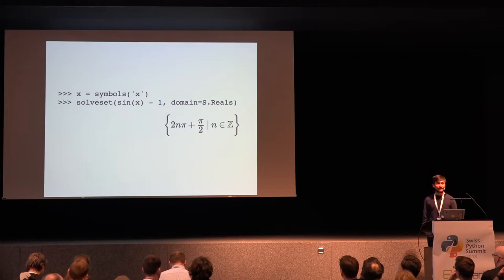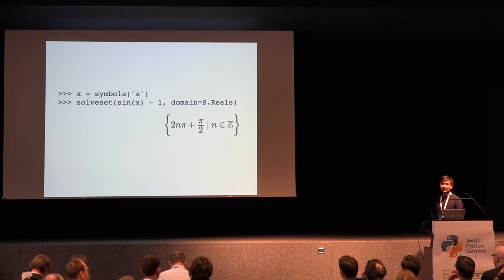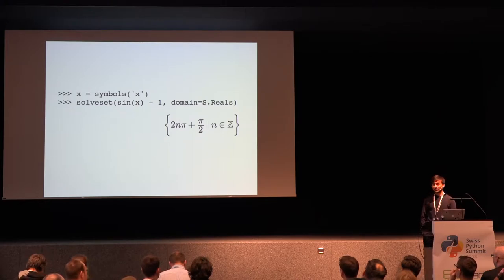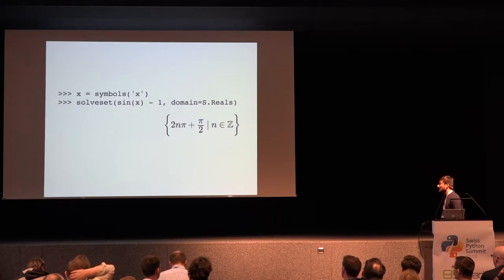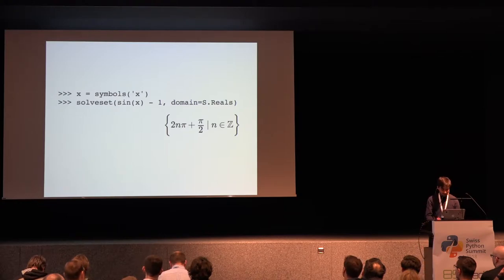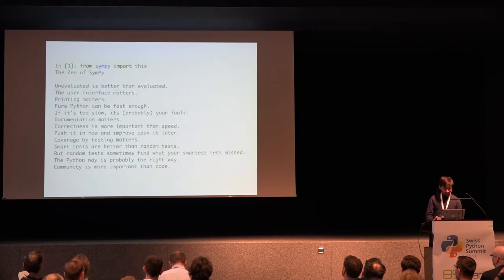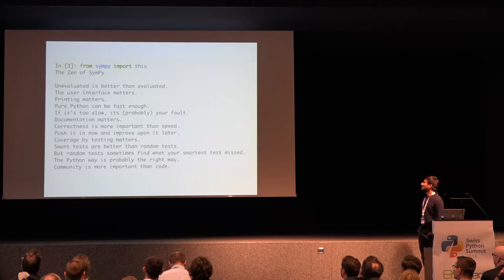It's pure Python. So if you want to play with symbolic stuff — like if you say 3.14, the value of Pi is numeric. If you say 22 by 7, that's symbolic. So if you want exact answers like these, you can use SymPy. We also have our own Zen, so you can play with it.